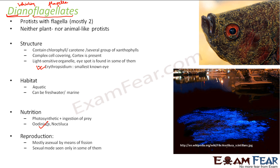One important point: as mentioned, dinoflagellates mostly have two flagella, but these two flagella are not similar to each other — they are dissimilar, ribbon-like structures. One is a transverse flagellum with a wavy ribbon, and the other is a longitudinal flagellum. Together, the transverse and longitudinal flagella result in forward movement as well as turning movement of the dinoflagellates.